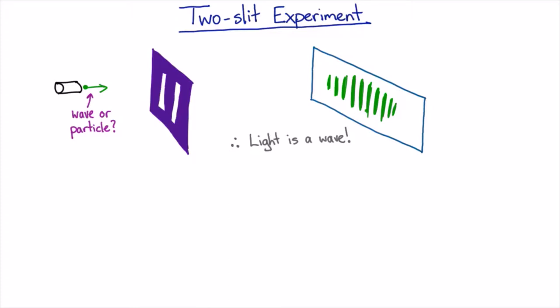In the years to come after that, Fresnel wrote a thesis about wave properties of light, and Poisson tried to prove him wrong by saying, well, obviously, if light's a wave, then if you have a perfectly round object...